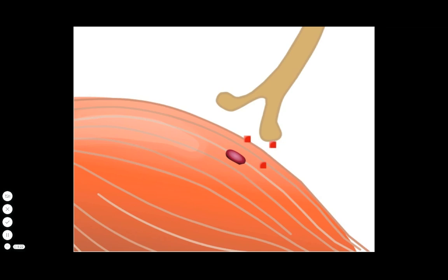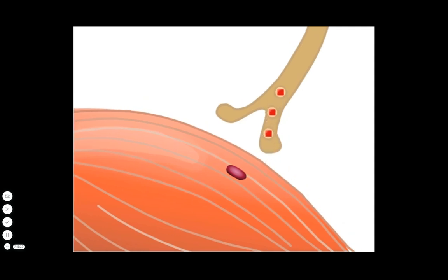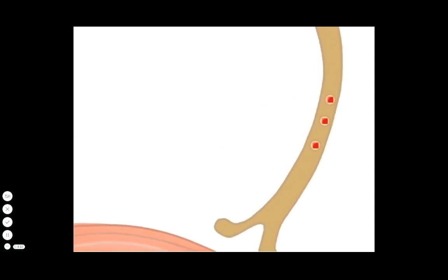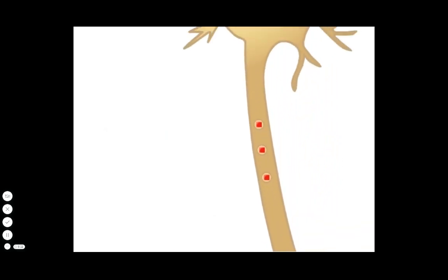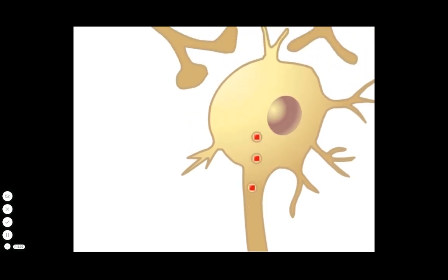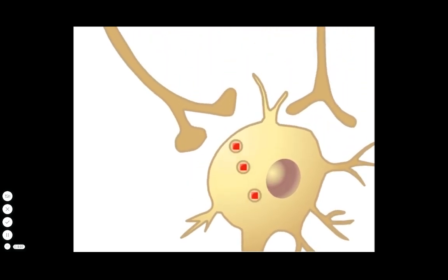Tetanospasmin binds to receptors at the ends of motor neurons. The cells internalize the receptors, with the hitchhiking toxins attached, and transport the material in a retrograde fashion up the long axon and into the cell body within the spinal cord. The toxin is then deposited outside the cell, where it binds to receptors on inhibitory neurons.